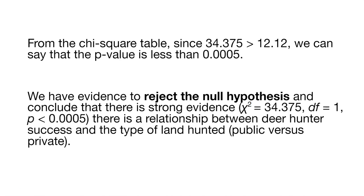When it comes to describing the results from a chi-square test, I encourage you to use something like what's in this second paragraph here. This is how you might write it in a scientific paper. We have evidence to reject the null hypothesis. There is strong evidence that chi-square value is quite large at 34.375.